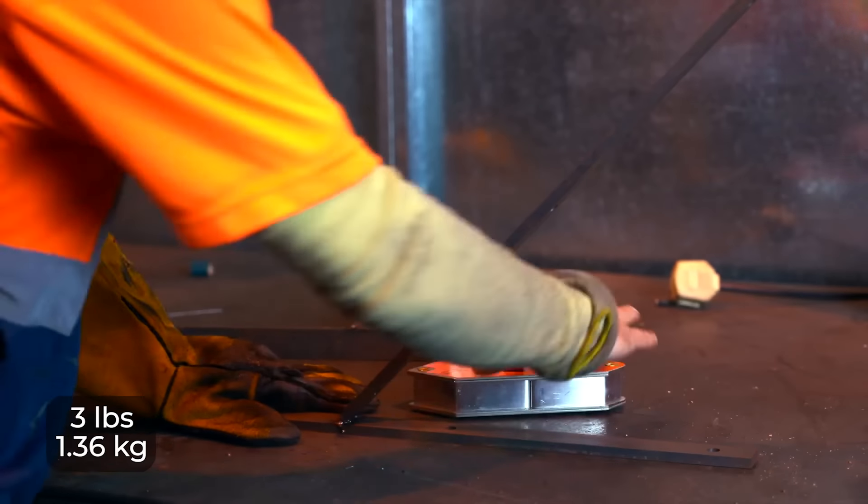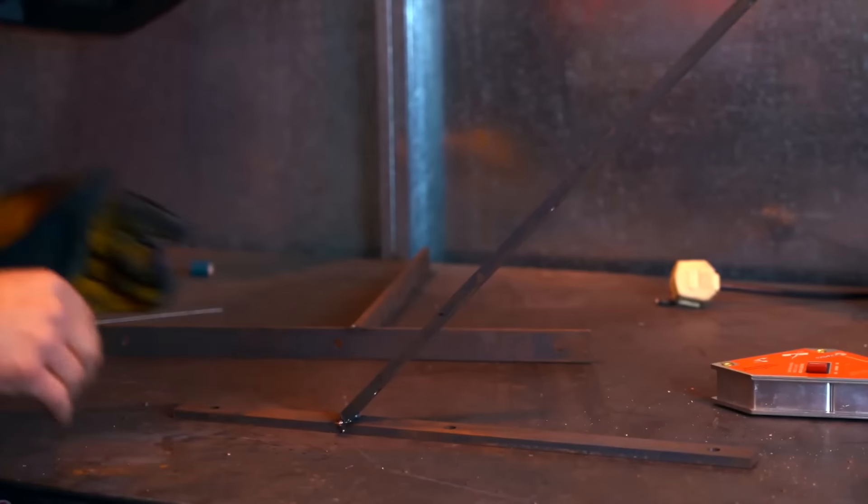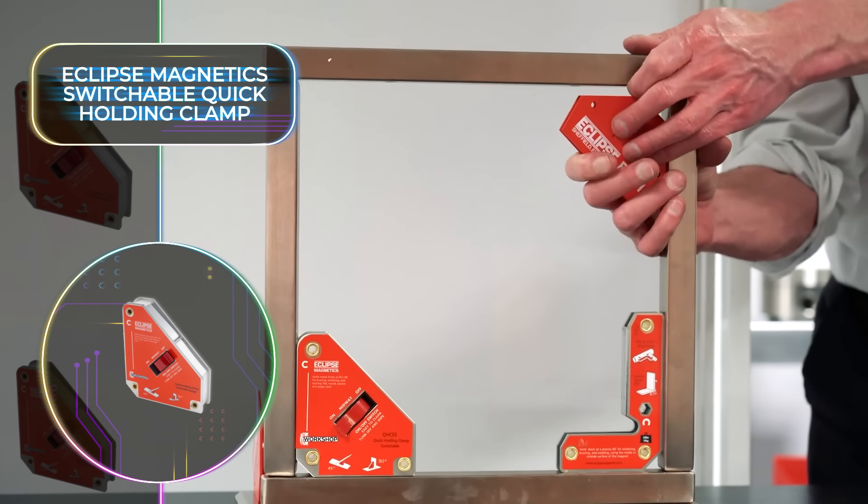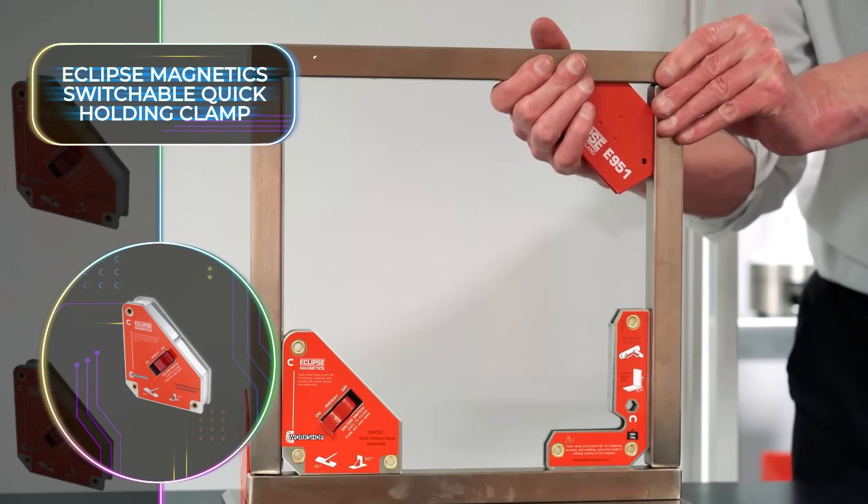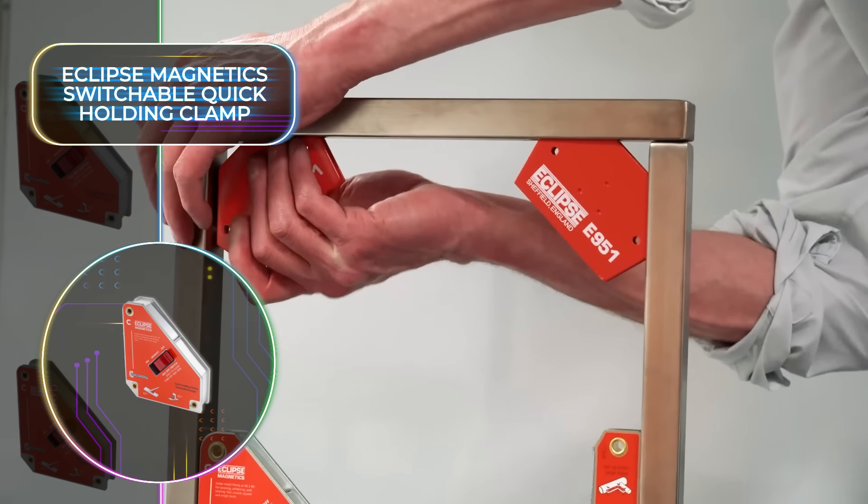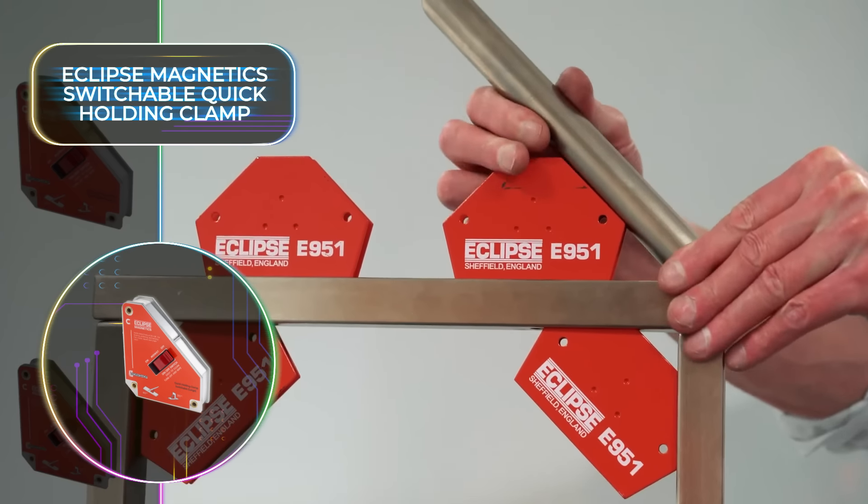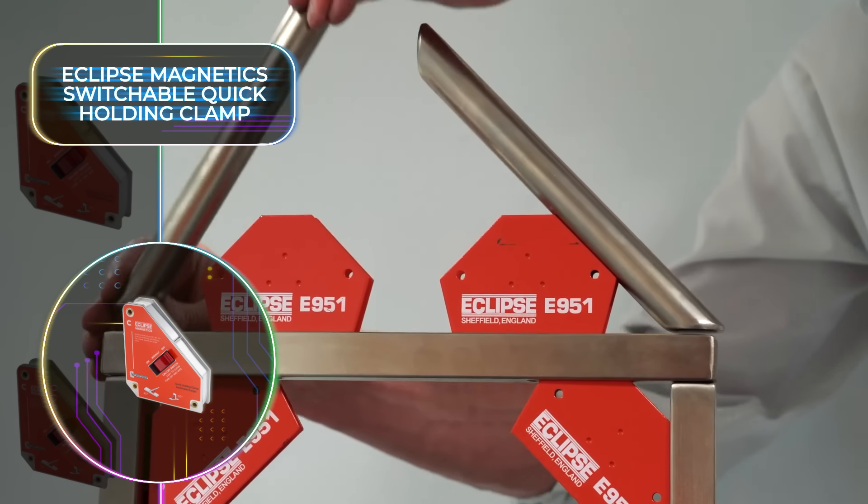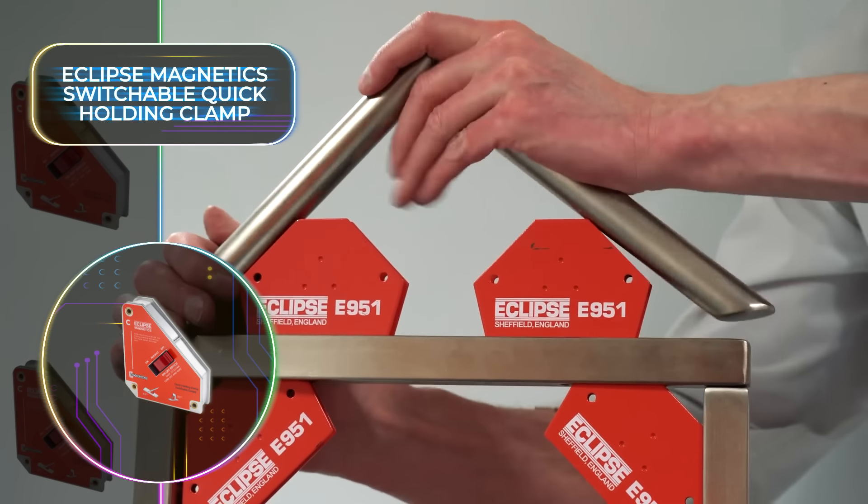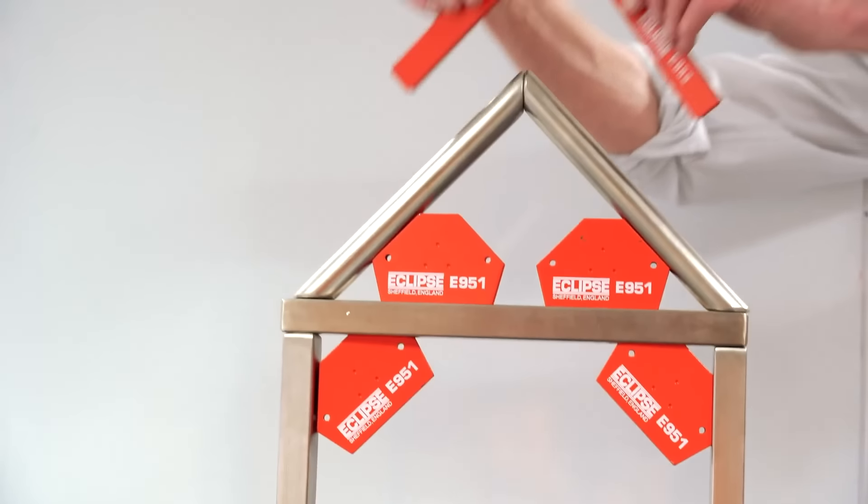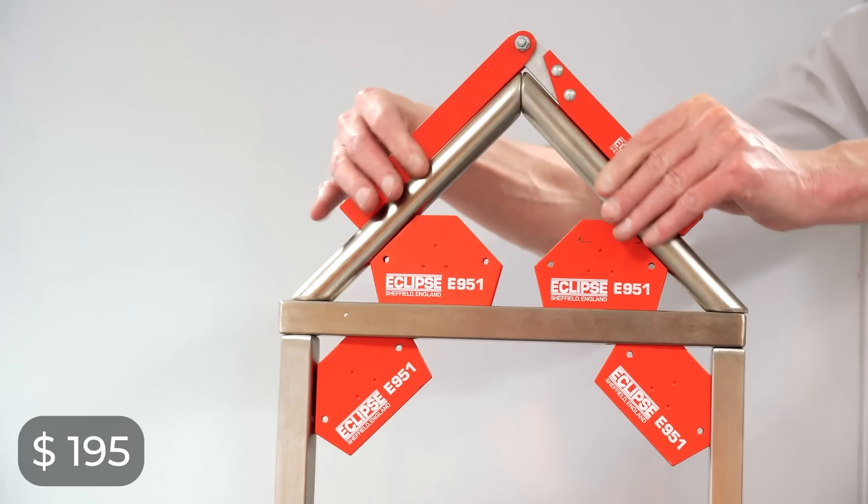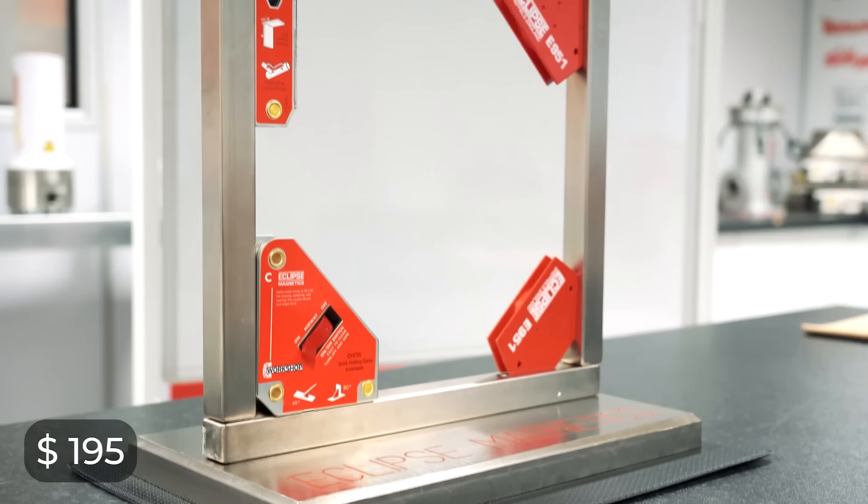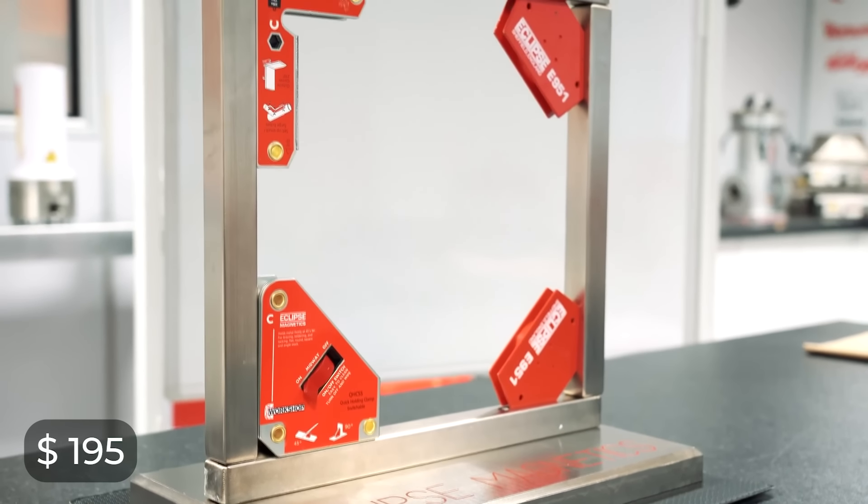The second is a larger variant weighing nearly 3 pounds or 1.36 kilograms, providing a formidable 165 pounds or 74.84 kilograms of force. Both will help you swiftly weld details at precise angles of 45 or 90 degrees. Thanks to the integrated neodymium magnets in these advanced clamps, you don't need to buy any extra external fasteners. Perfect for round and square tubes, the price starts at $195.